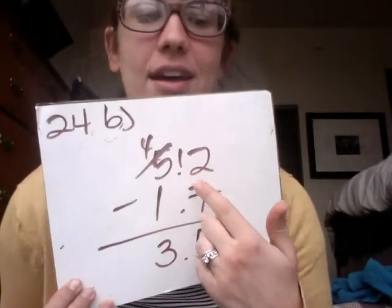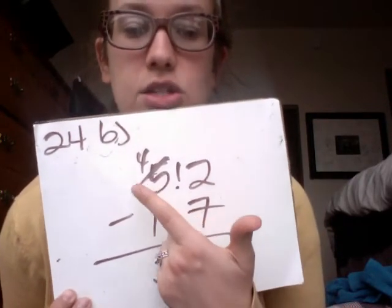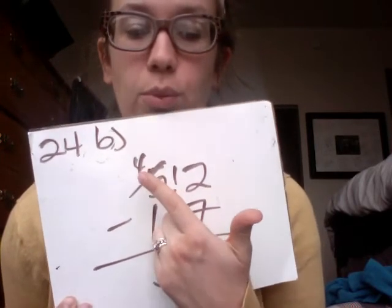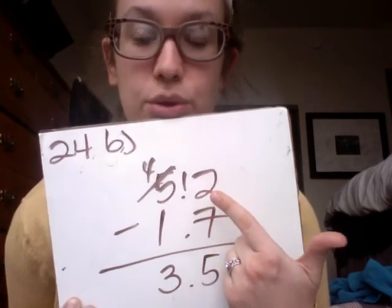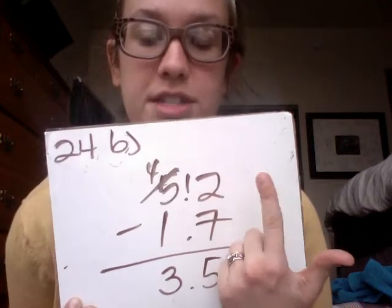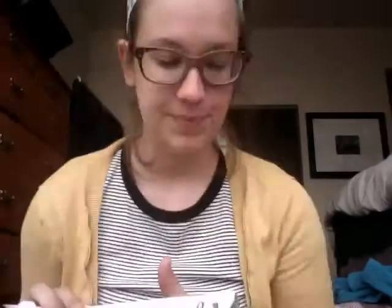Let's move on to B: 5.2 minus 1.7. Here I did not have enough tenths — with just two tenths I couldn't subtract seven from. So I renamed my five to be four ones and added ten new tenths to my two, making 12 tenths. 12 tenths minus seven is five, then four ones minus one is three. Answer: 3.5.